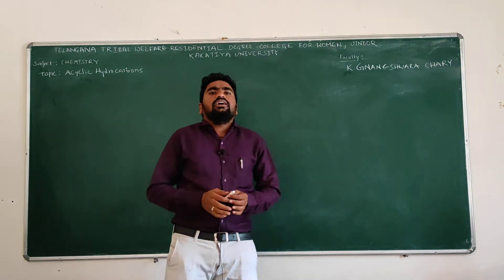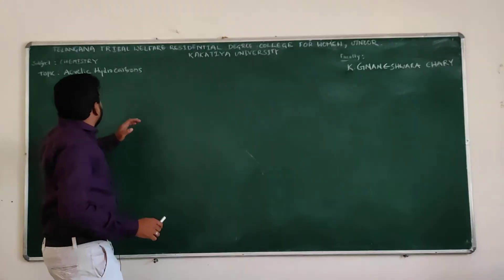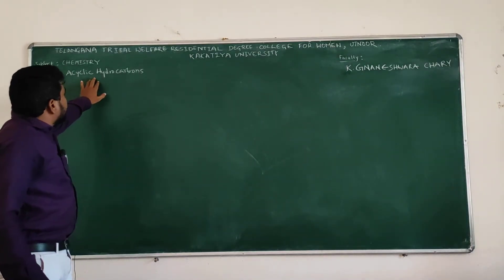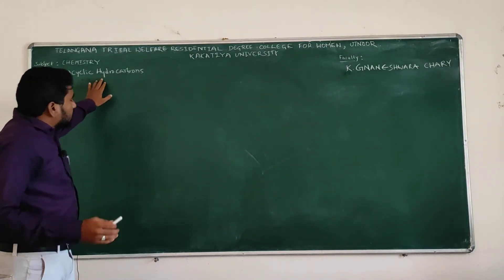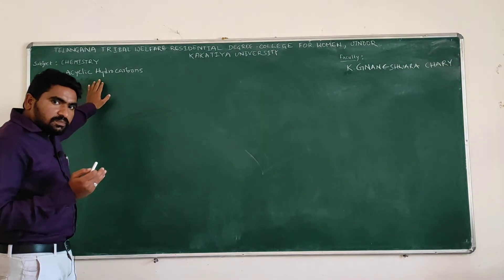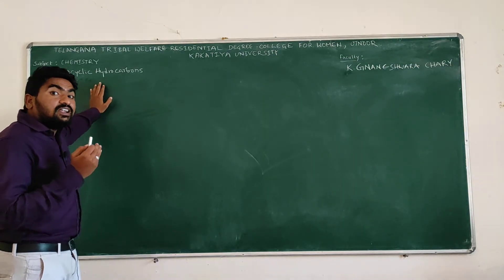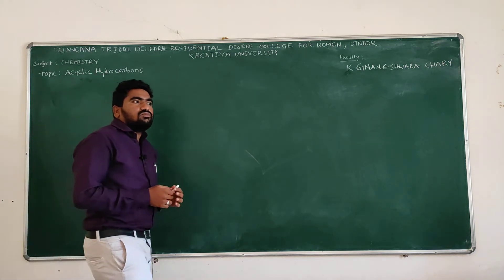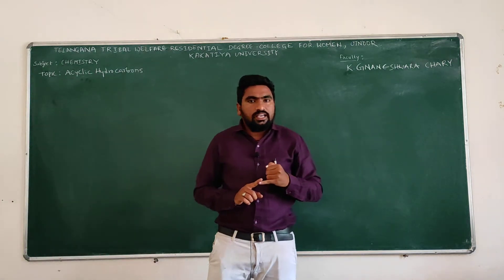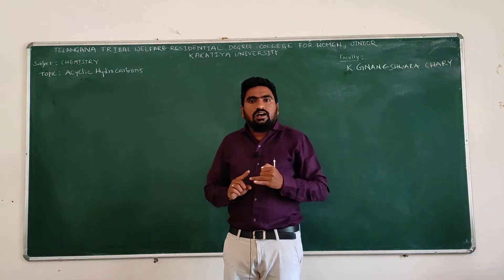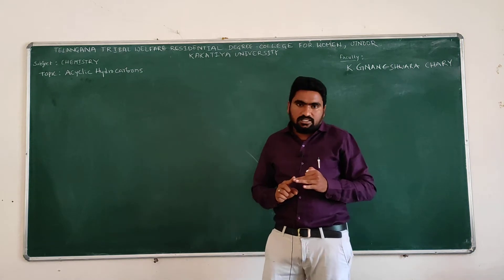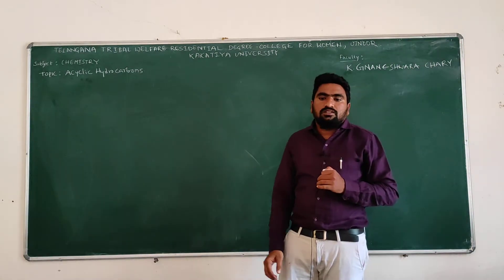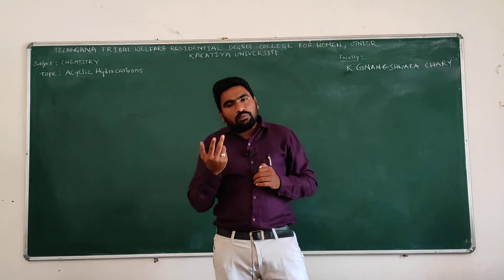So in acyclic compounds, what is the meaning of acyclic hydrocarbons? Here, hydrocarbons which are not having cyclic nature — for example, alkanes, alkenes, and alkynes — these are the acyclic hydrocarbons. When we are discussing about any topic, we need to know some fundamentals regarding that.